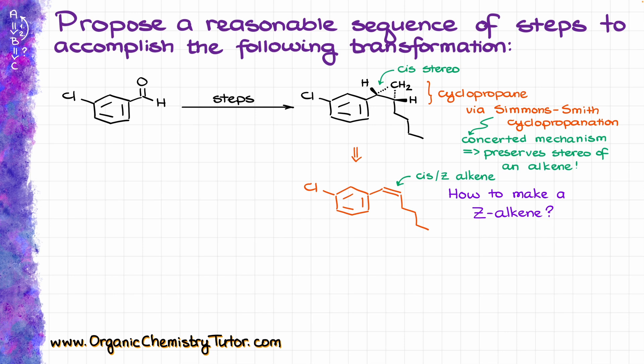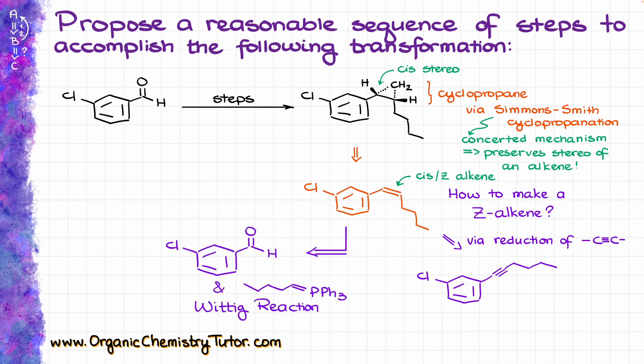There are two different methods. First is a reduction of an alkyne with hydrogen over the poisoned palladium — the Lindlar's catalyst — which can give us the cis alkene. The other one is going to be via the Wittig reaction. In this case, the Wittig reaction would have to use the aldehyde as a starting material, and that is my actual starting material, so probably I should go with the Wittig reaction here.